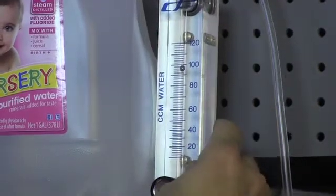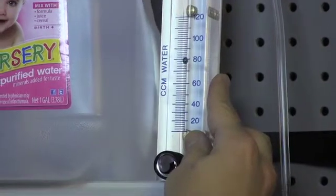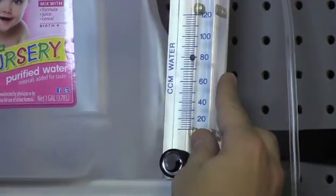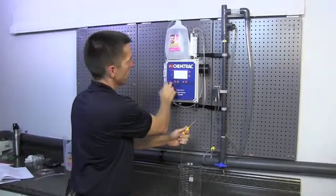Then we're going to slow the flow back down to that 75 milliliter per minute rate, which on this unit was right around 80 in the middle of the ball. Then we're going to let this count for a few cycles.